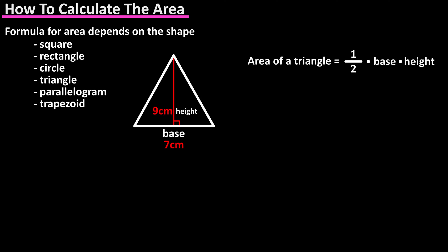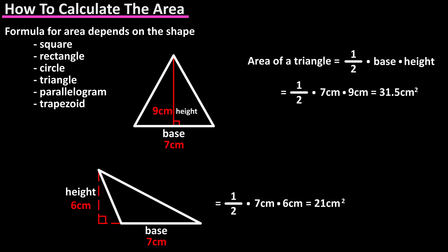The formula for the area of a triangle is one half or one over two times the base of the triangle times the height of the triangle. In this example we have one half times seven centimeters times nine centimeters, and calculating out the answer is 31.5 centimeters squared. And here is an example of a triangle where one of the angles is greater than 90 degrees.